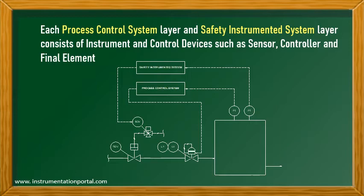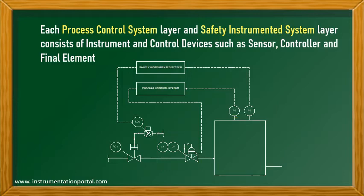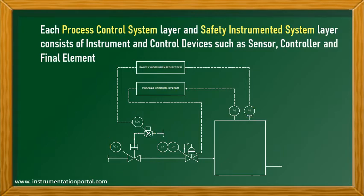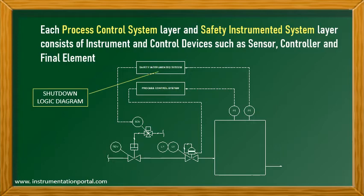In this picture, there are a pressure transmitter and control valve that are part of the PCS, and there are a pressure transmitter and shutdown valve that are part of the SIS. This control system for the safety instrumented system must be programmed by entering the logic that is specified in the shutdown logic diagram.